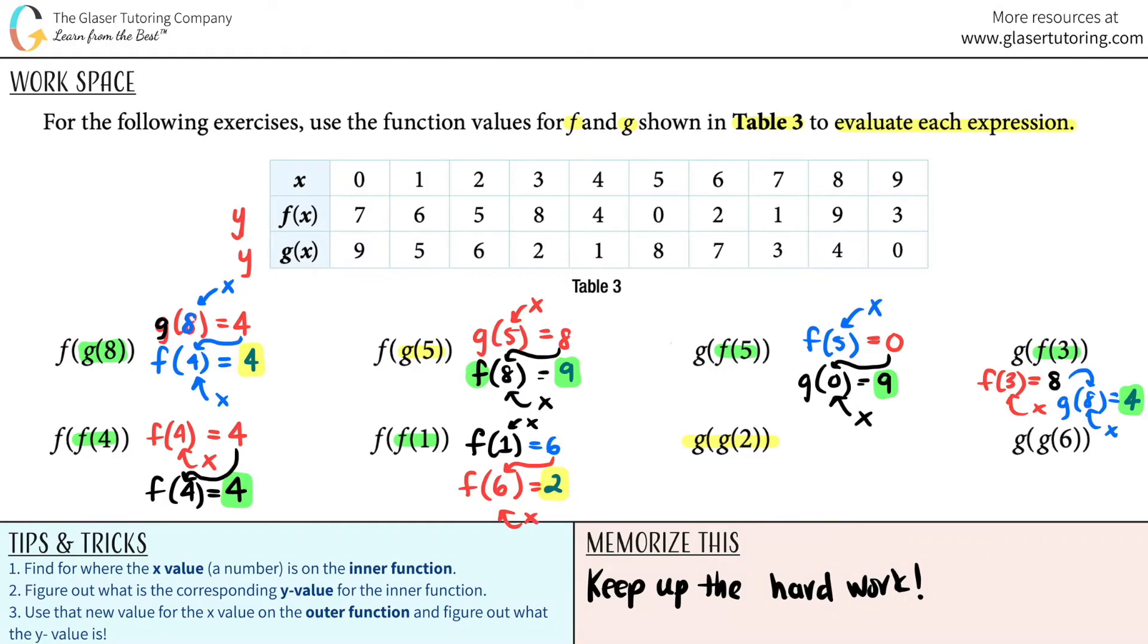g of g of 2. Inner function is g of 2. This is your x value. 2 is over here on the x. You got to go down to g. So that's a 6.